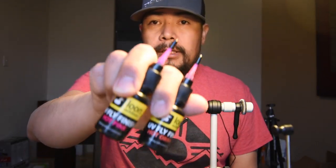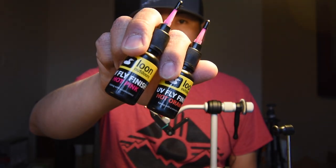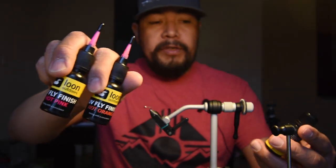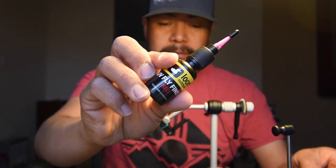As well as that, again, the precision tip, so you can get in tight and cut away things a little bit more accurately. As well, I did pick up an assortment of the Loon colored UV resins: black, hot orange, pink, red.